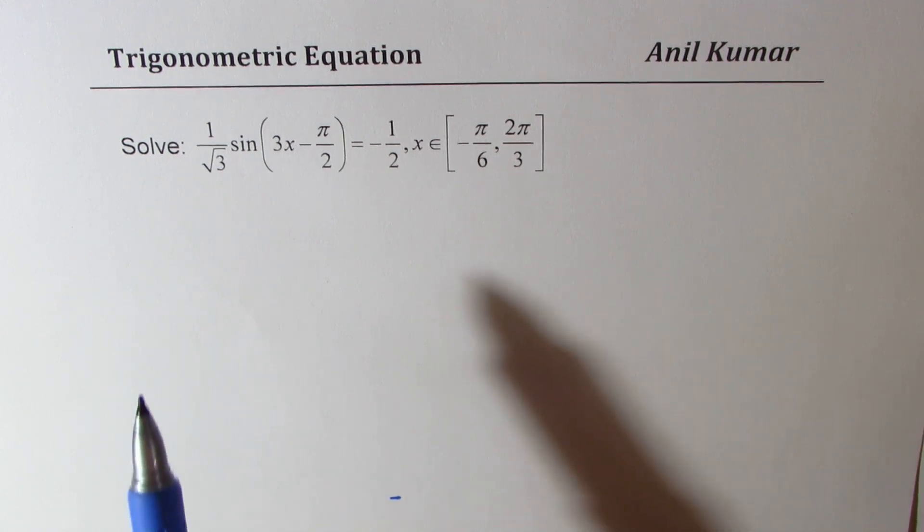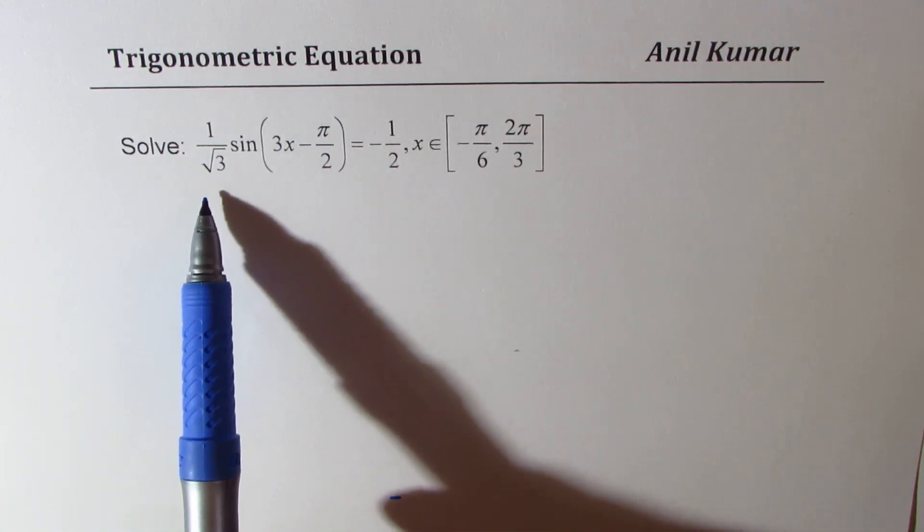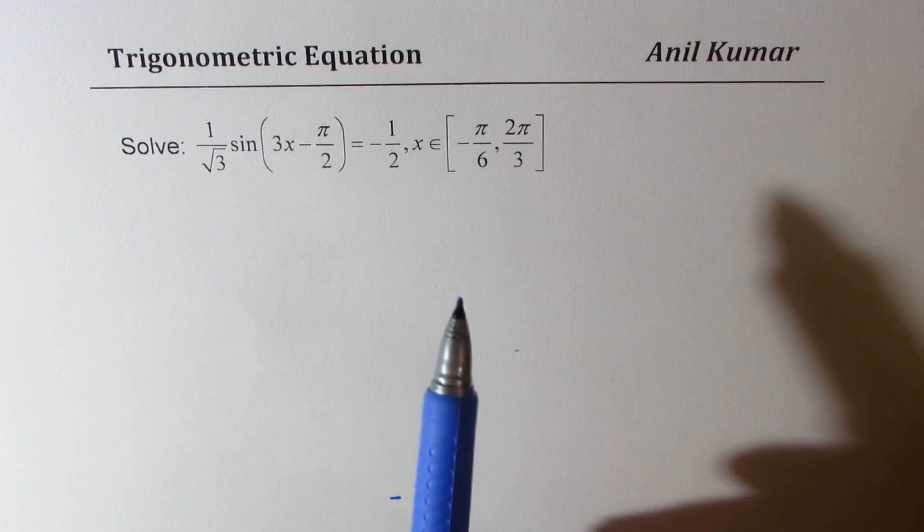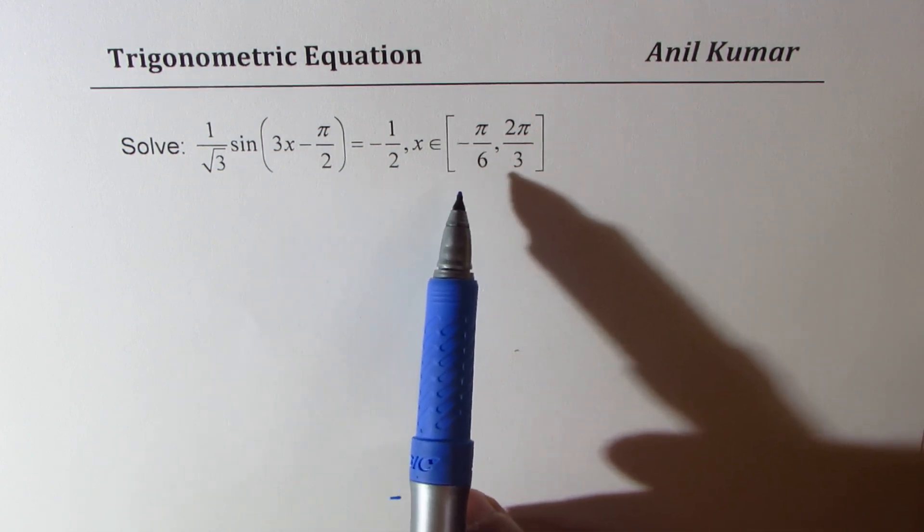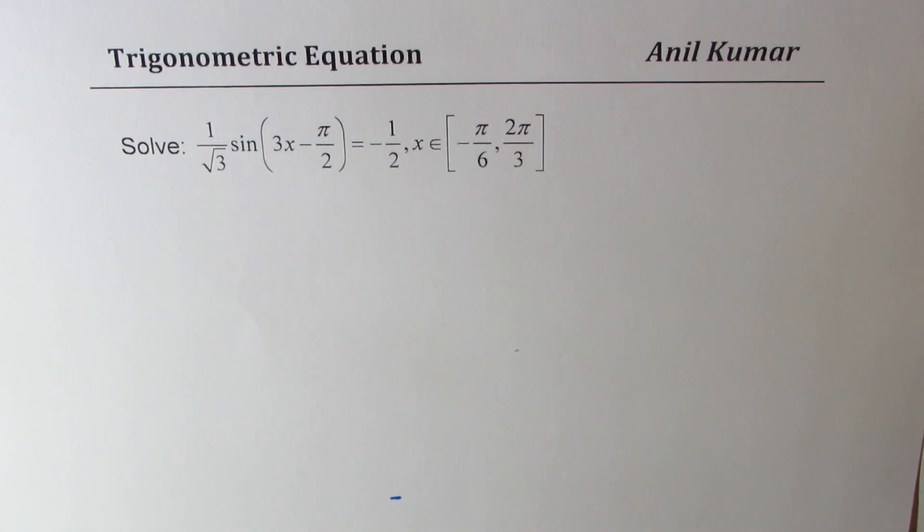The question here is to solve trigonometric equation 1 over square root 3 sine of 3x minus pi by 2 equal to minus half, where x belongs to closed interval minus pi by 6 to 2 pi by 3.